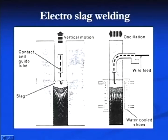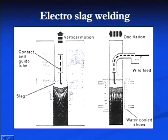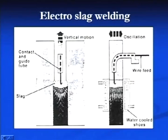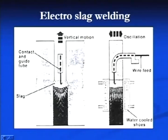This high temperature helps to melt the electrode and the faying surfaces of the base metal. Gradually, the copper shoes acting as a mould between the plates to be welded are moved in the upward direction and the entire joint is completed in one pass. A combination of arcing and electrical resistance heating is responsible for producing the joint in electro slag welding.